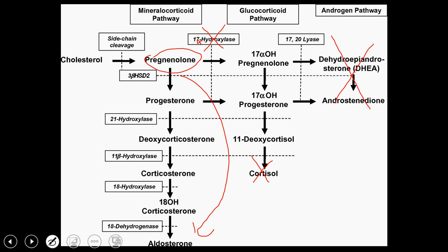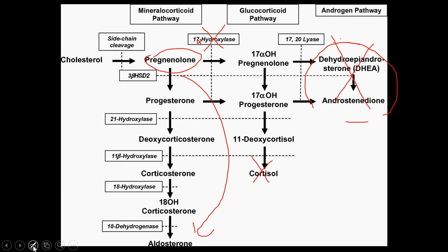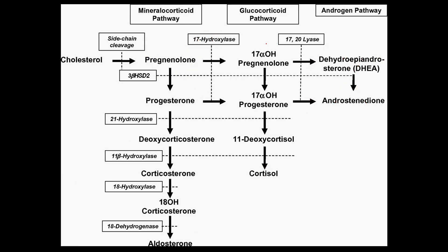Some other important things about 17-alpha-hydroxylase deficiency: in a male infant, you'll see ambiguous genitalia and undescended testes, because you have no sex steroids promoting the descent of the testes and promoting differentiation into male genitalia. In a female, you're going to see a lack of secondary sex characteristics — they might not have well-developed breasts or the normal distribution of body hair, because sex steroids play a role in those things. So to review: decreased 17-alpha-hydroxylase means no cortisol, no sex steroids, a lot of aldosterone, hypertension, and hypokalemia.